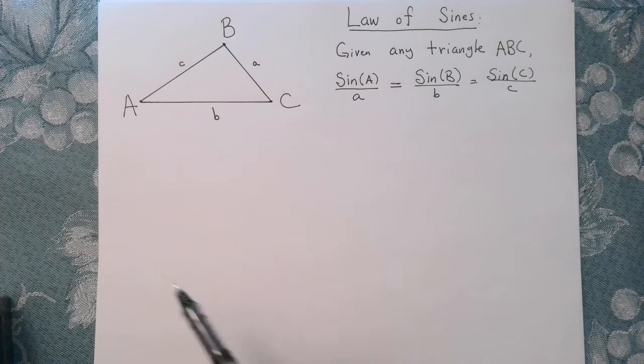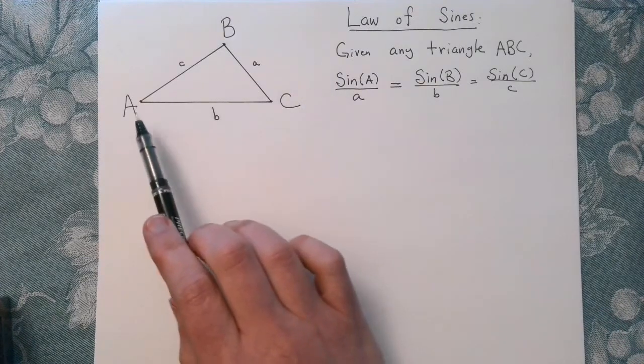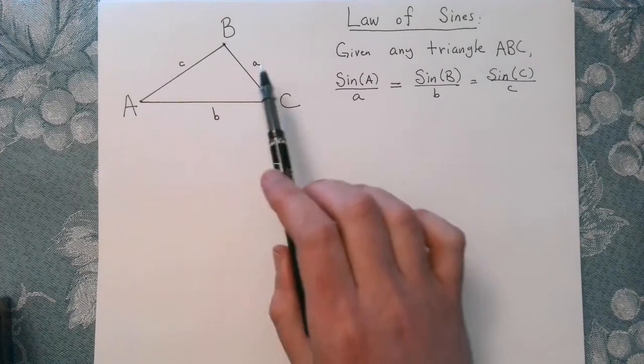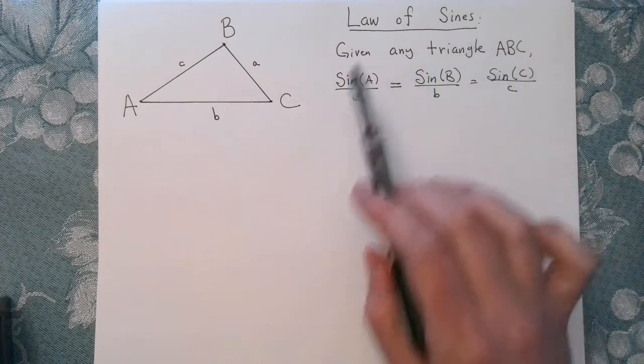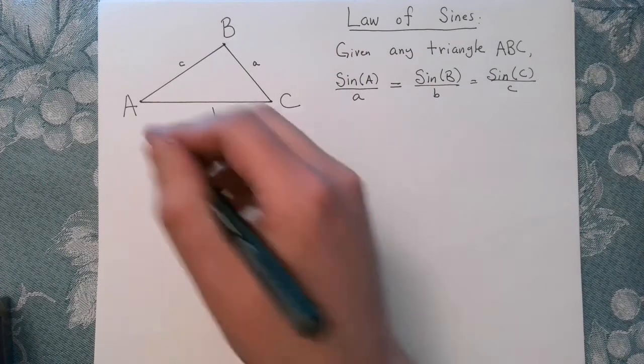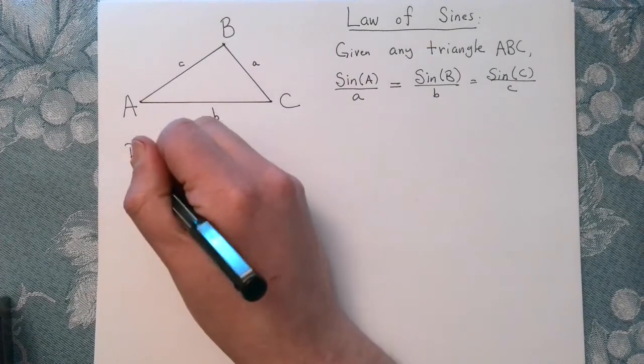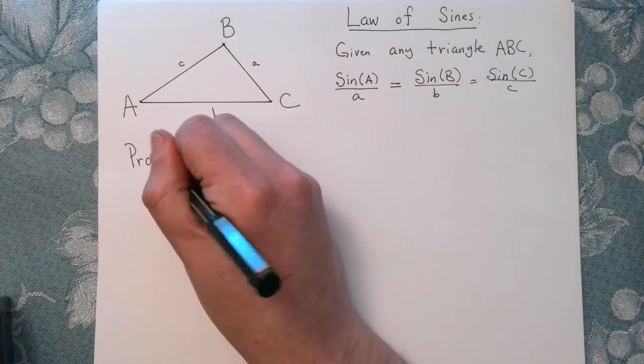So we're going to start out with the law of sines. And so suppose we have some triangle ABC, where capital A, B, and C are the angles, and lowercase a, b, and c are the sides. This is the result that we want to establish, and the key to this proof is to look at the trig formula for the area of a triangle.